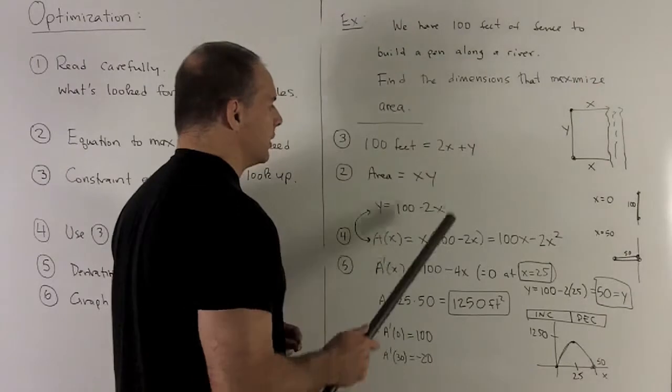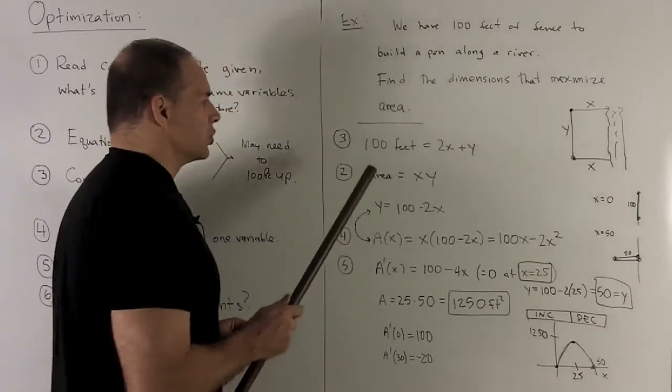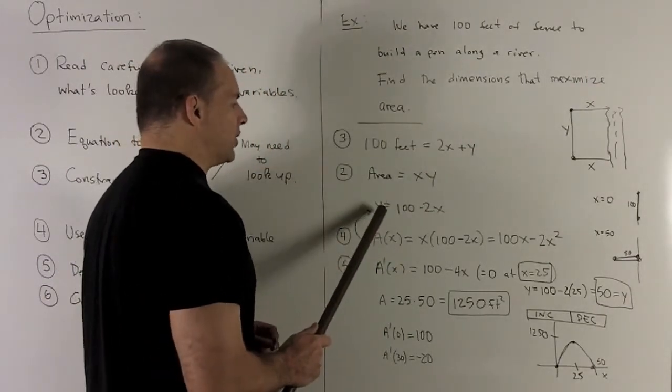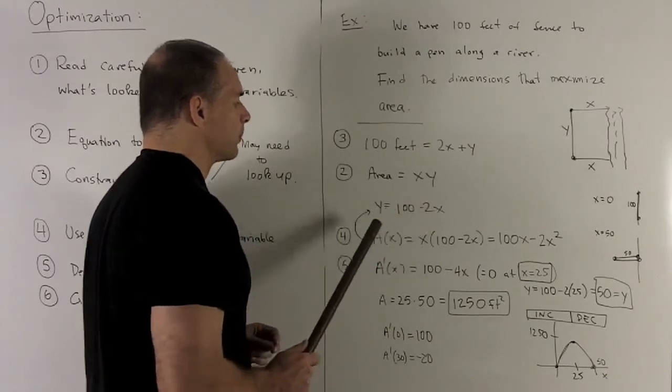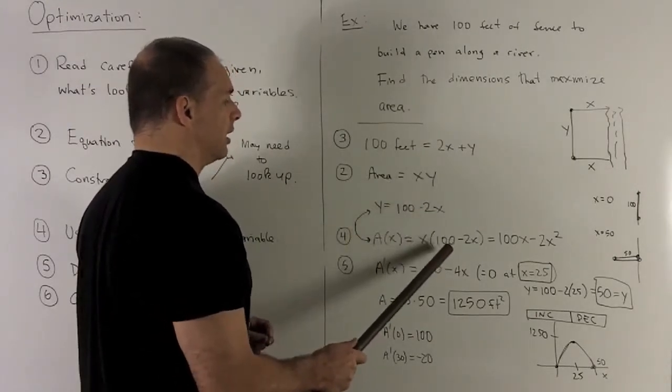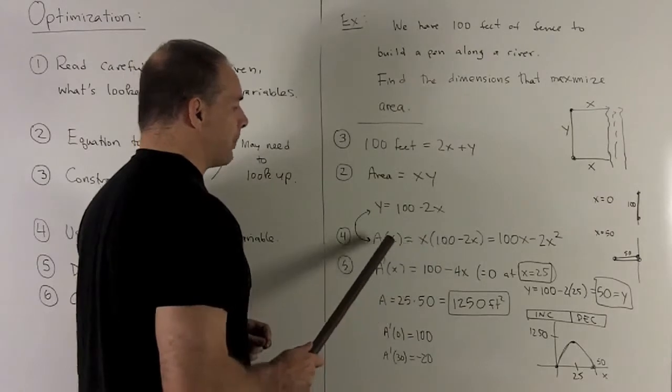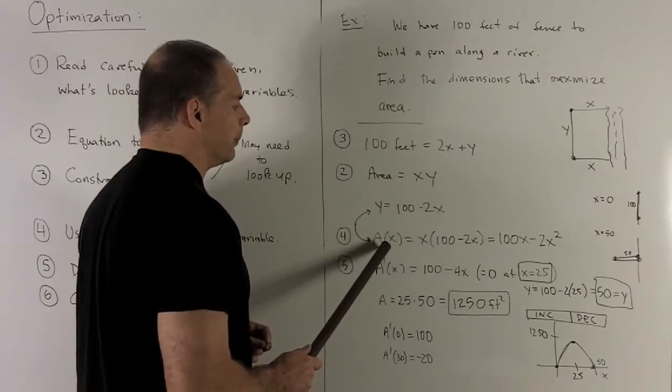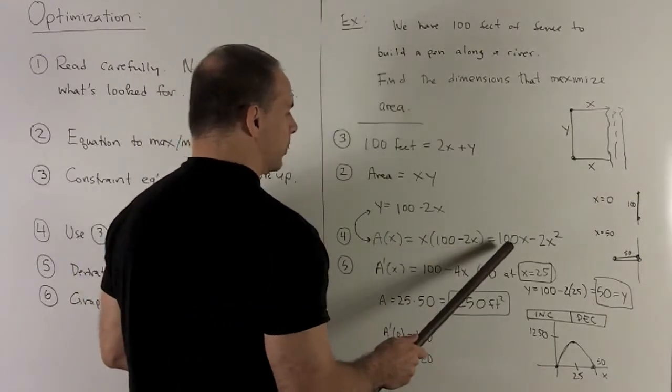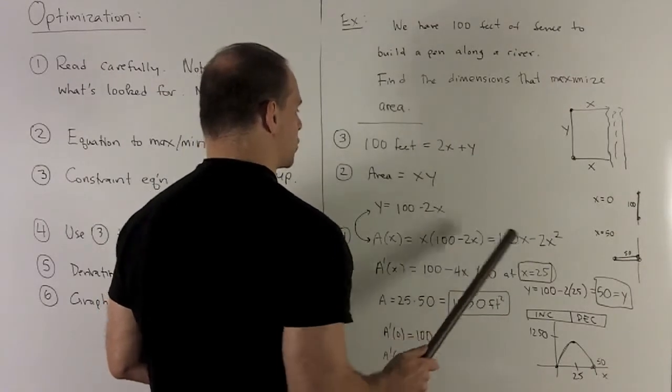Since we always work in x, let's get rid of the y. So I use my constraint equation, y is equal to 100 minus 2x. We can replace y with 100 minus 2x in our area equation. That puts me in terms of one variable. Our final equation is going to be 100x minus 2x squared.